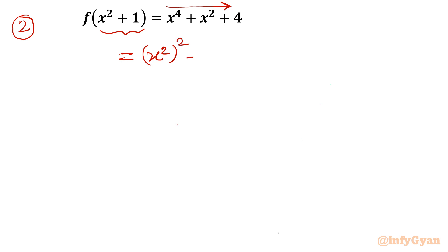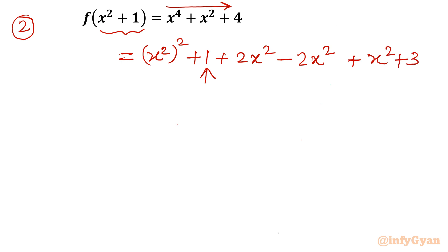I will write (x² + 1)². To form this I need to add 1, but since I'm adding 1, I also need to add 2x² and subtract 2x² to keep the expression balanced. So from the first three terms I can write (x² + 1)². Done.